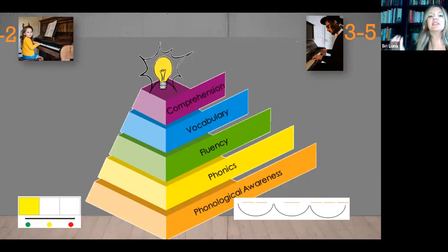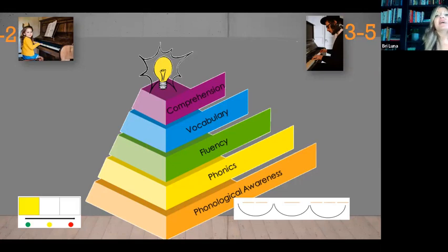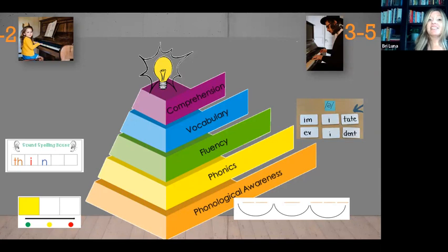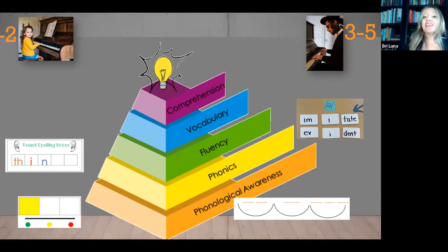Phonological awareness is hearing and manipulating the sounds in a language. In kindergarten, that might be hearing the sounds in 'cat' and identifying the first one. But in intermediate grades, phonological awareness is equally important because I need to know how many syllables a word has, and then hear the sounds in each syllable in order to spell it. So if I want to spell 'evident,' I need to make sure I can hear 'evident' and all of those sounds. Phonics is matching those sounds to a code or a symbol or a letter. In primary, that would be matching the sound to 'th.' In intermediate, that would be matching the sounds in 'evident' — and there are a lot more of them.